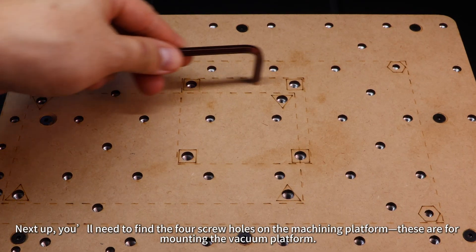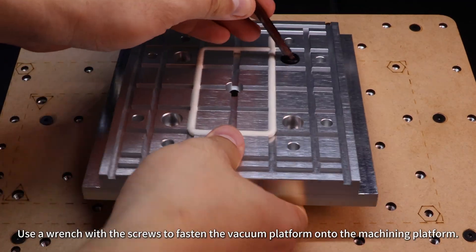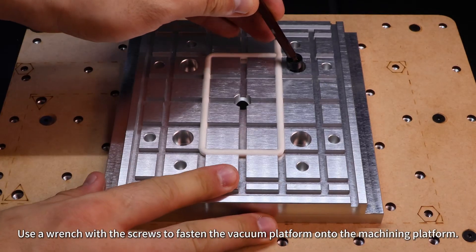Next up, you'll need to find the 4 screw holes on the machining platform. These are for mounting the vacuum platform. Use a wrench with the screws to fasten the vacuum platform onto the machining platform.